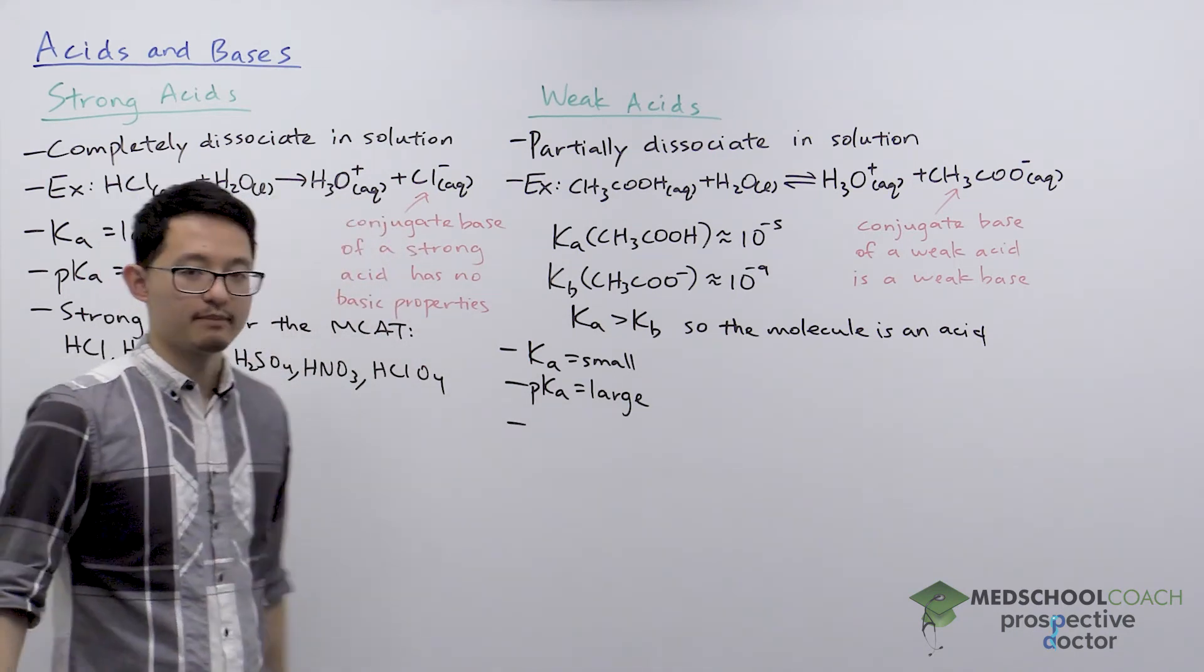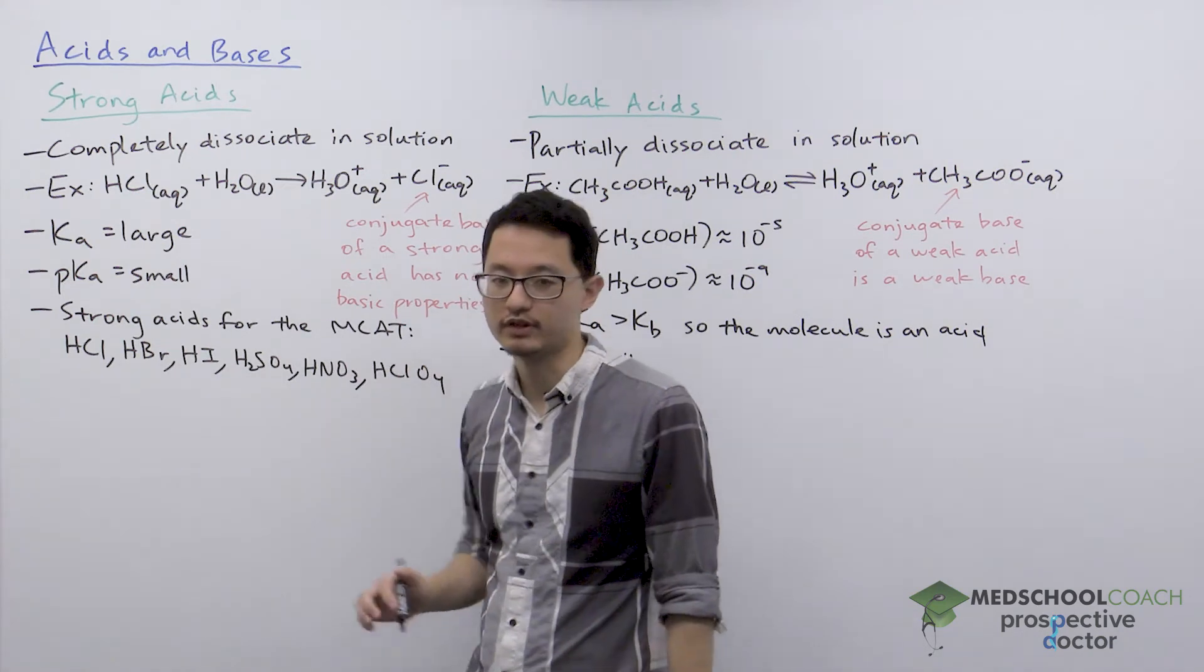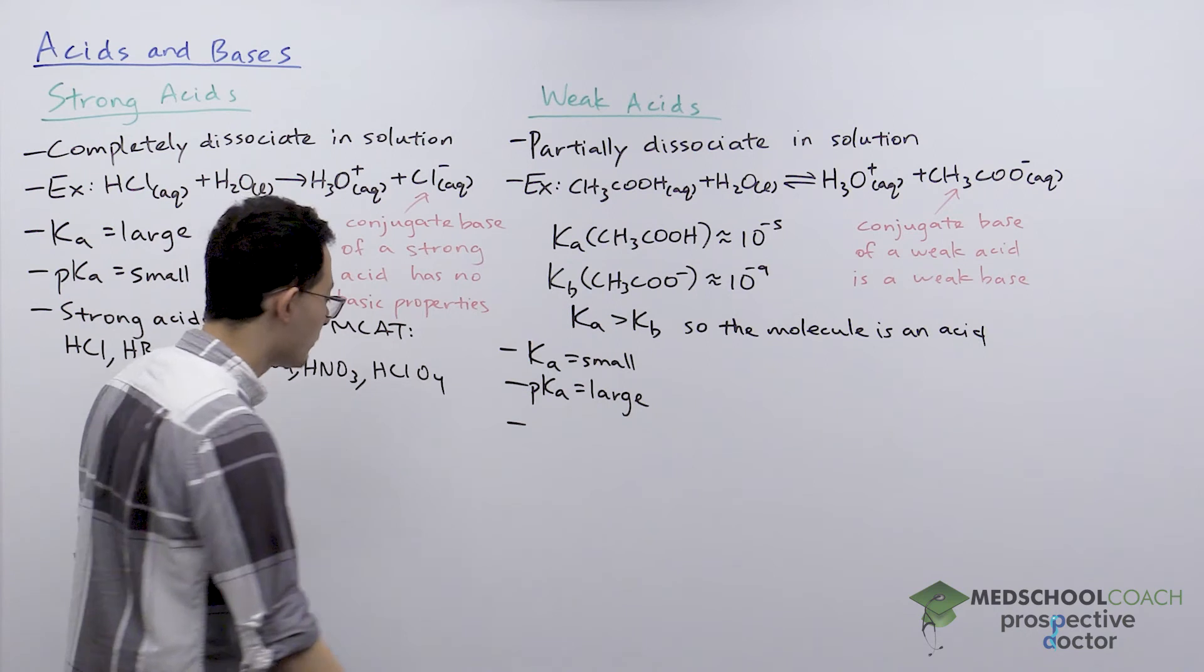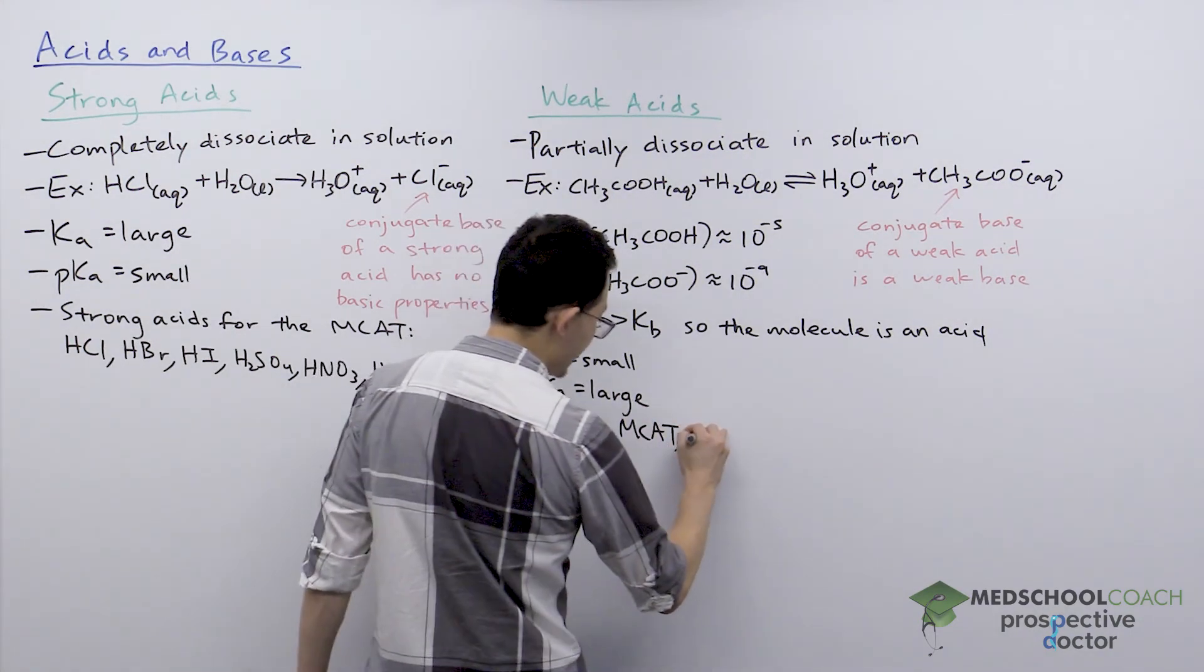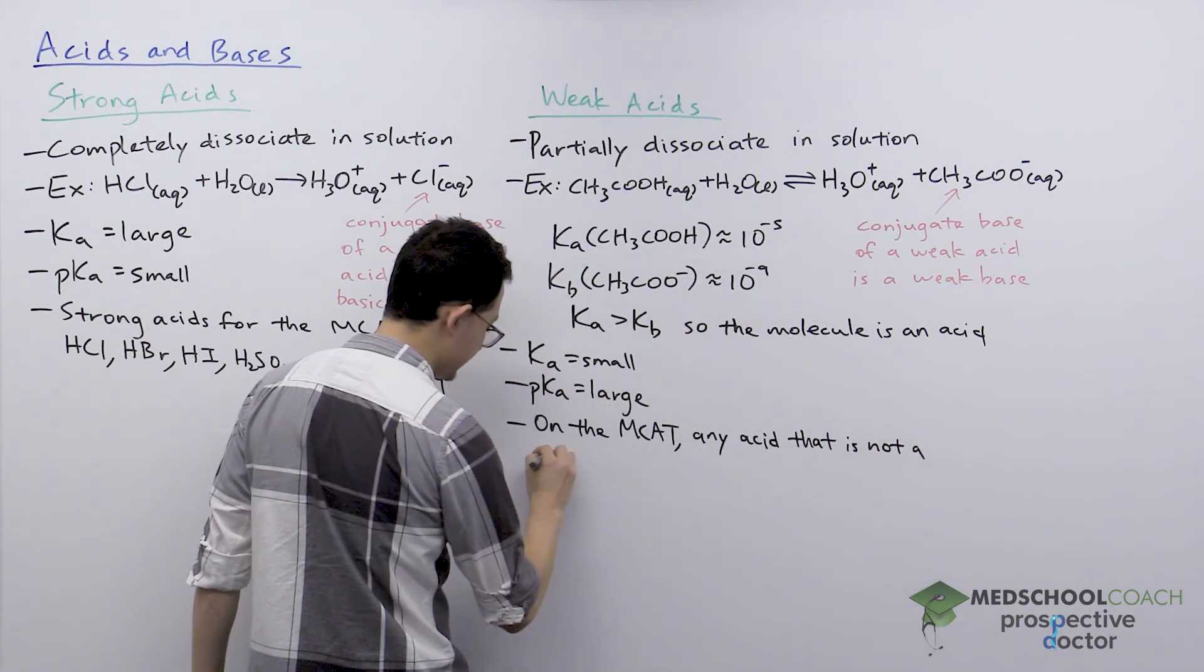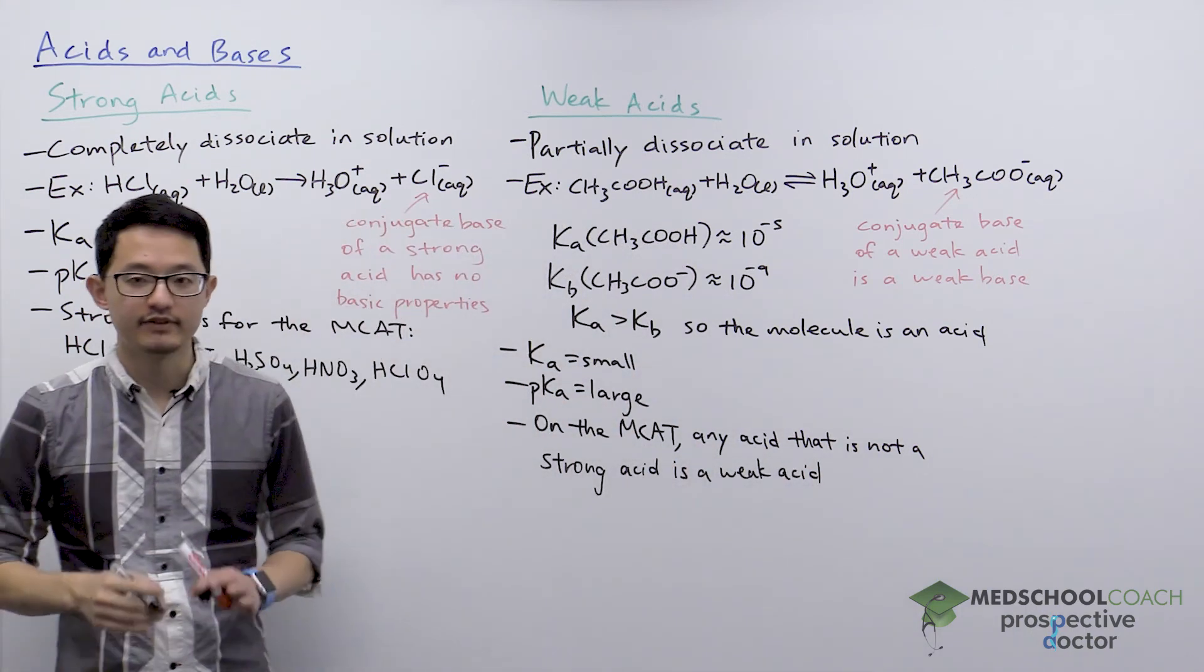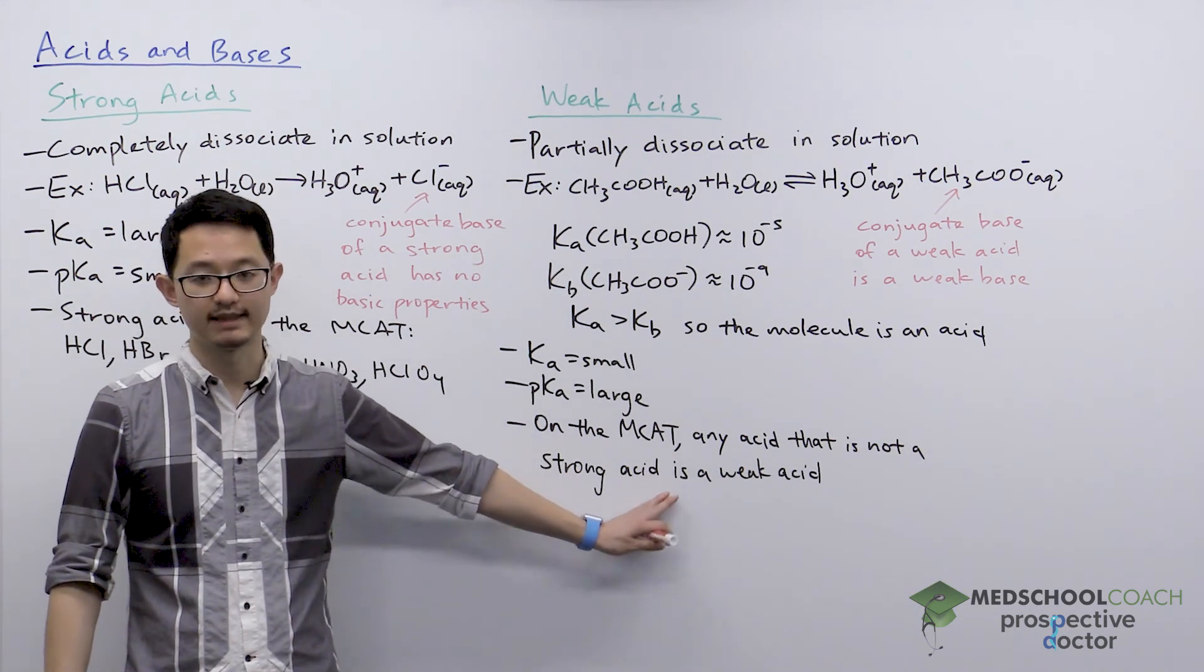And finally, in terms of weak acids on the MCAT, unfortunately, it's a little bit more complicated than strong acids. Strong acids, we've got a small list for you to have memorized. Weak acids, we can't give you a list because there are way too many possible weak acid molecules that can show up on exam. So the way that you actually operate for the MCAT is on the MCAT, any acid that is not a strong acid is a weak acid.